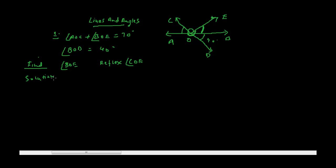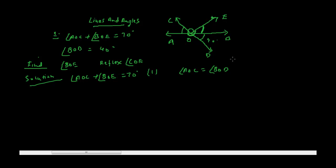As we know, angle AOC plus angle BOE equals 70 degrees — let's call this equation 1. We also know that angle AOC equals angle BOD, because they are vertically opposite angles, which equals 40 degrees. Let's call this equation 2.